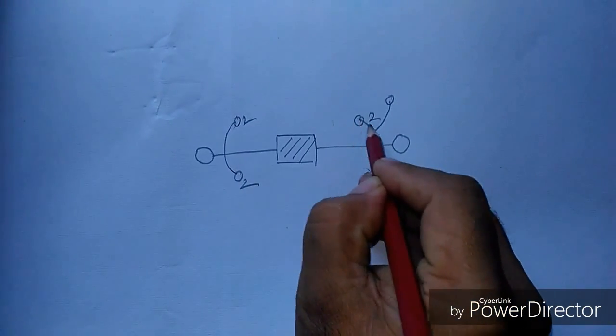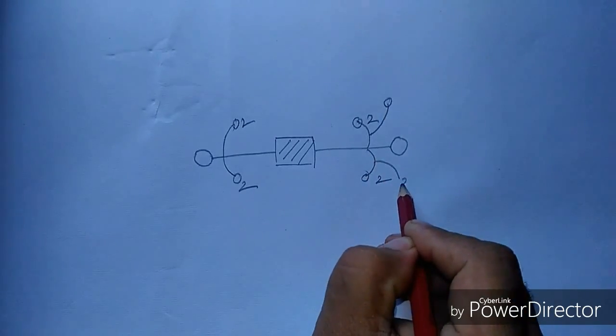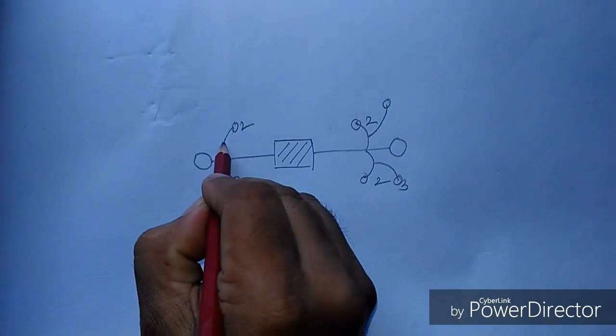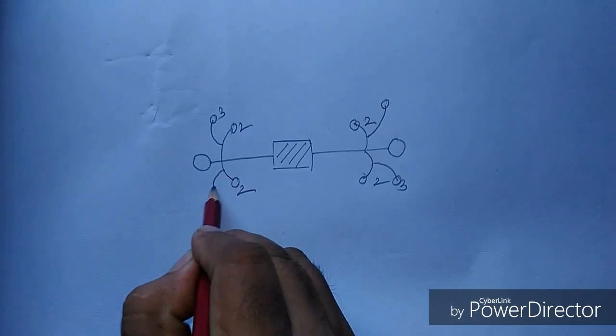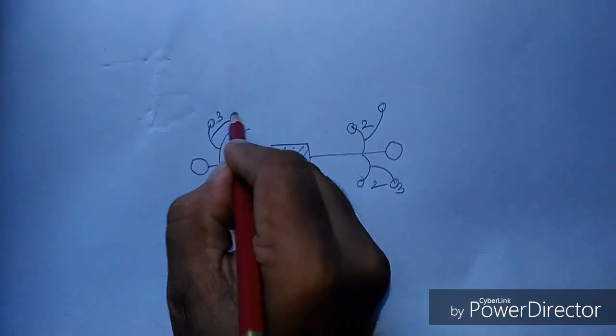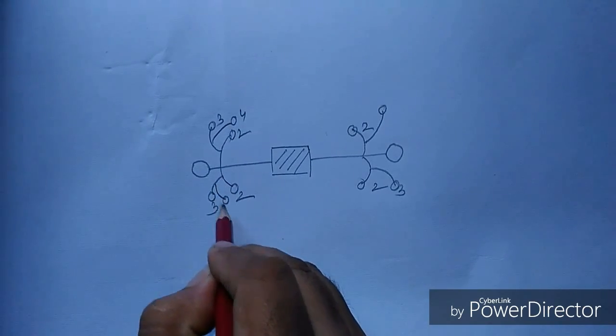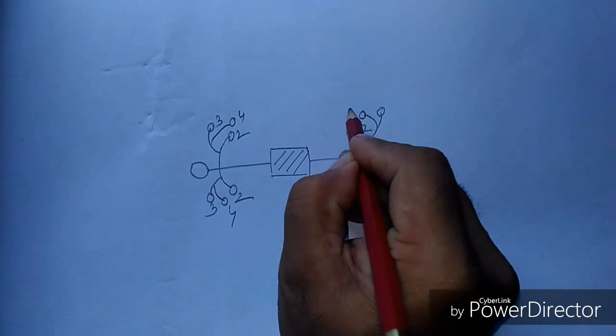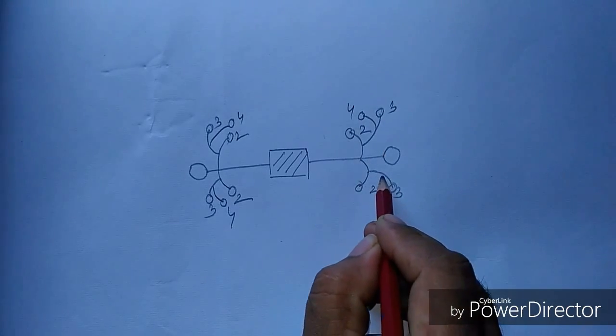And below the second flower, the third flower will come out. Below the third one, the fourth flower appears.